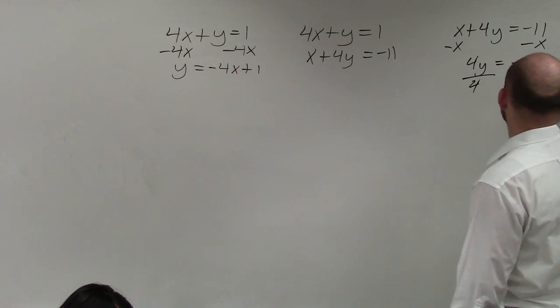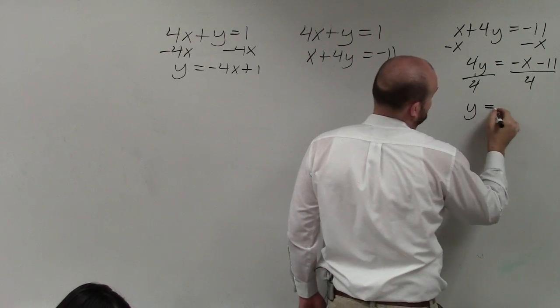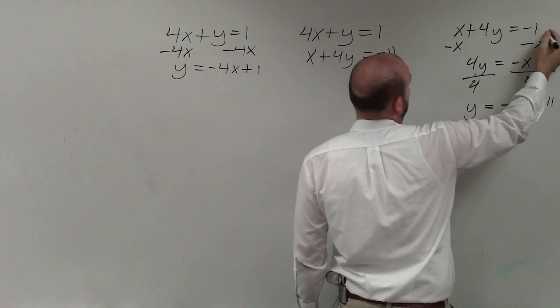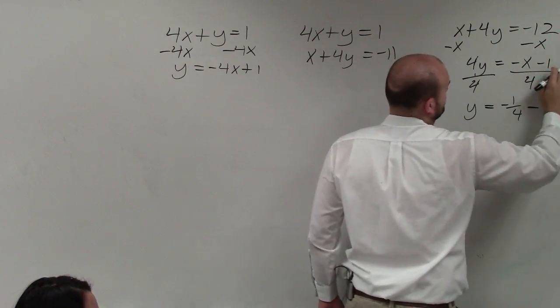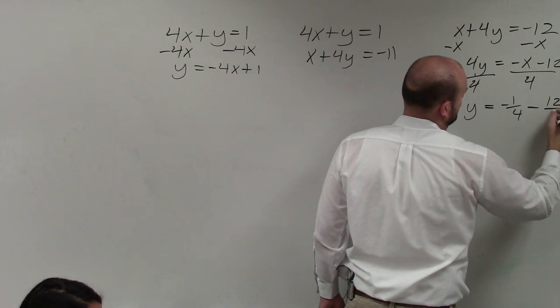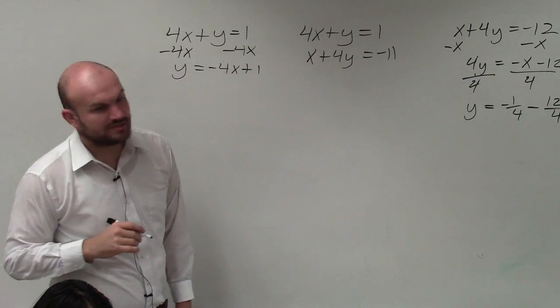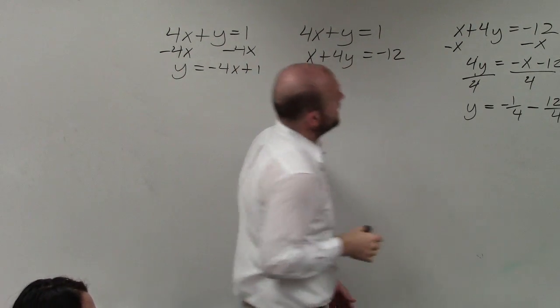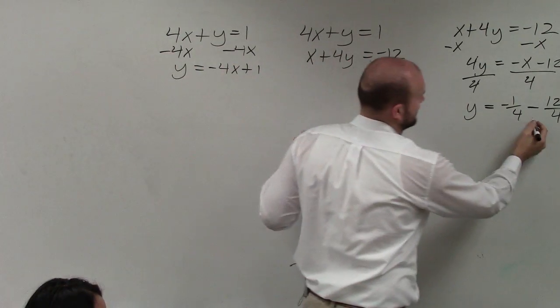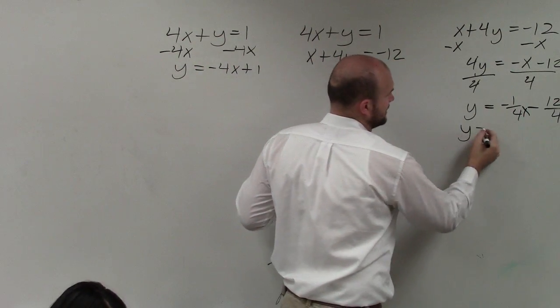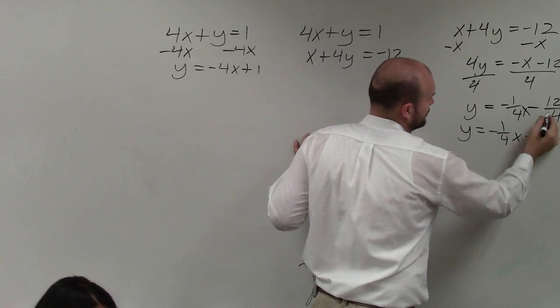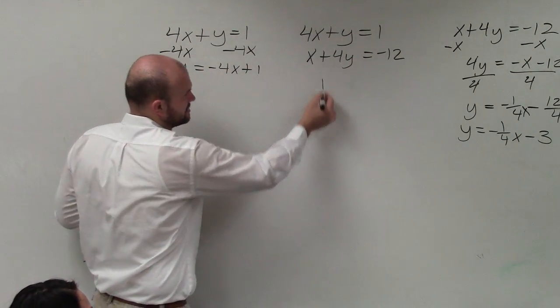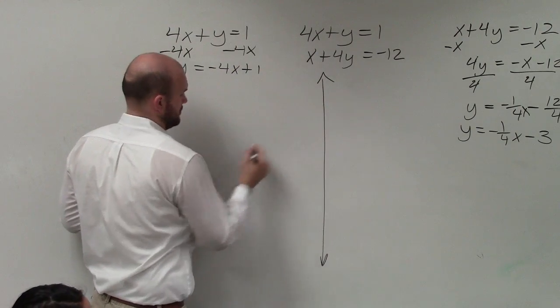Then I'll divide by 4, and I get y equals negative 1/4 minus... oops, I'm sorry, I wrote down the problem wrong. That's a 12. That's a 12. My bad. Make sure when you divide that 4, you divide it into both of them. Sorry, guys. So now what we have is, that's x. So I have y equals negative 1/4 x minus 12 divided by 4 is 3. So now what we're going to do is we're just going to simply graph our solution here.